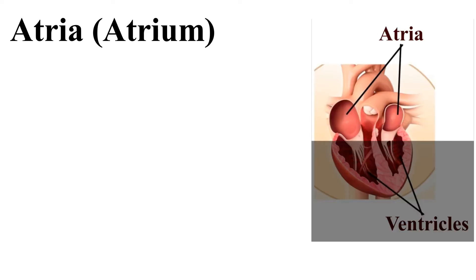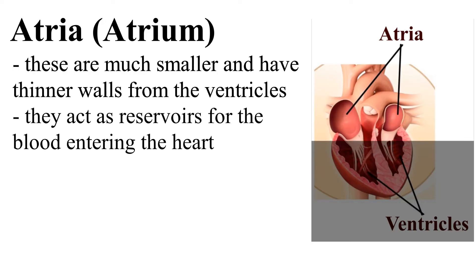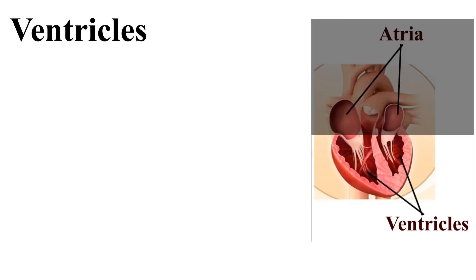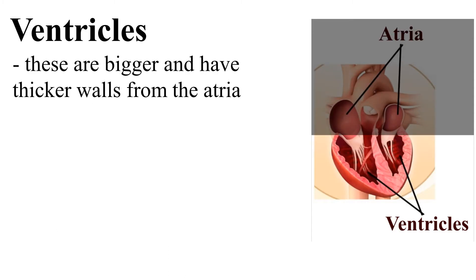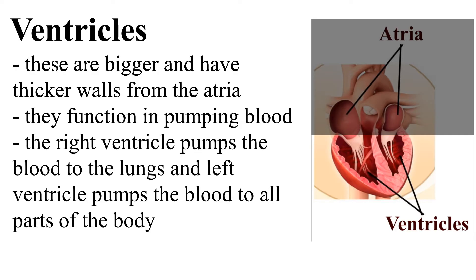The Atria, or Atrium, are much smaller and have thinner walls than the ventricles. They act as reservoirs for the blood entering the heart. The right atrium holds blood from other parts of the body, and the left atrium holds blood from the lungs. The Ventricles are bigger and have thicker walls than the atria. They function in pumping blood. The right ventricle pumps blood to the lungs, and the left ventricle pumps blood to all parts of the body.